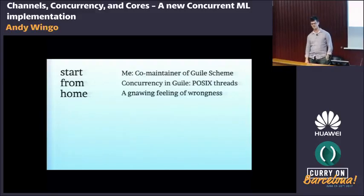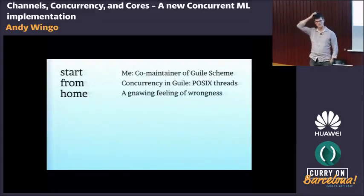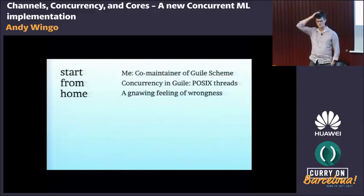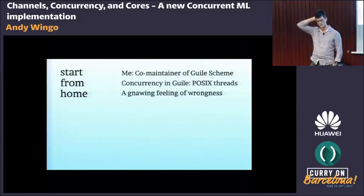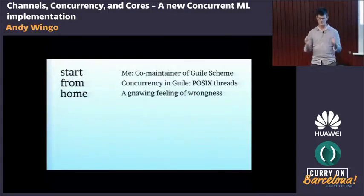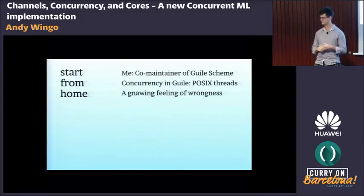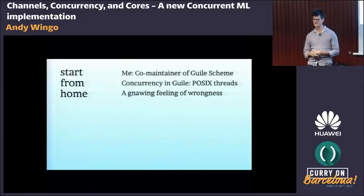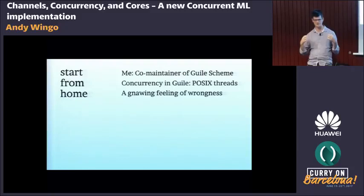My name is Andy. I co-maintain a Scheme implementation called Guile, and at work I also work in LuaJIT. I've worked on other language virtual machines like V8 and SpiderMonkey. On the Guile side — which is really my love, we all have projects we have a soft spot for — it was never a very good story as far as concurrency goes. That always gnawed at me, because we have pthreads, which is just not satisfying.